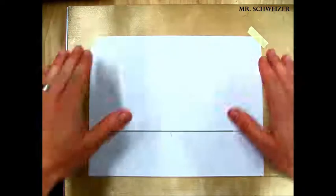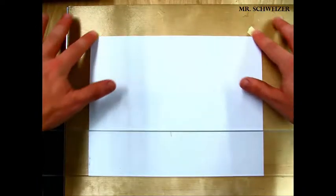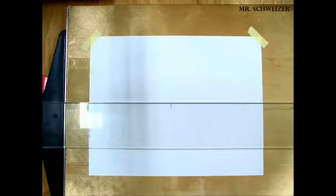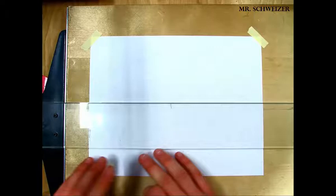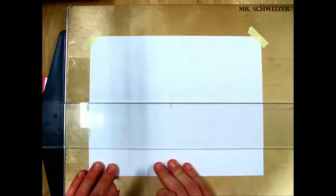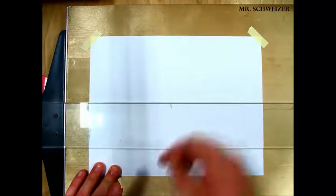Once my top two corners are taped down I press the tape down and now I'm going to check to make sure that my alignment is correct. Once it's correct I'm ready to tape the bottom corners.